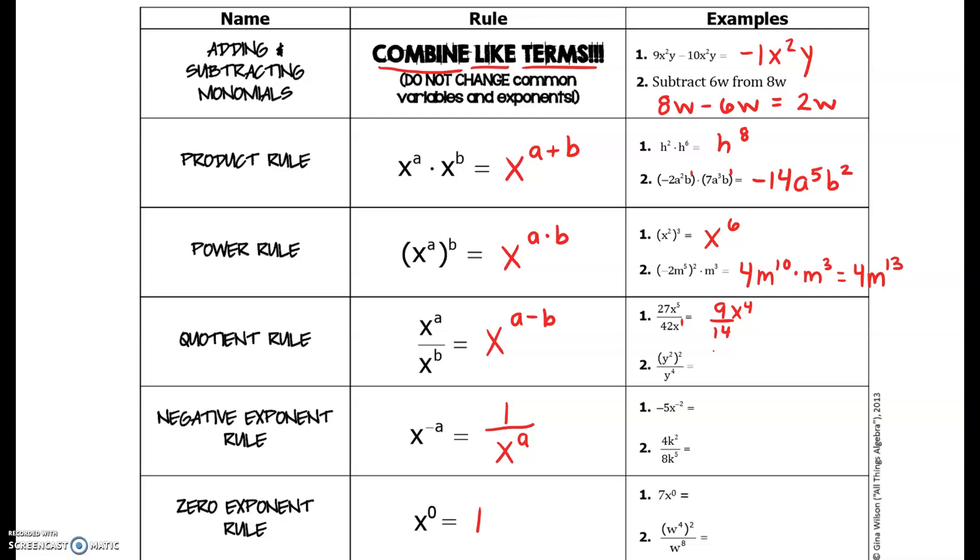In number two, we have a power rule on the top of the fraction, so multiply two times two. You'll get y to the fourth divided by y to the fourth. When you subtract four and four, you will get zero, so anything raised to that zero power is equal to one.